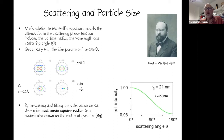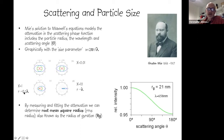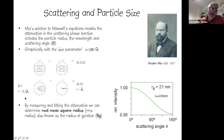It is common in the field to characterize particles with a size parameter X, which is essentially the circumference of the particle divided by the wavelength. When X equals one, the radius is about one-fifth of the wavelength. As the particle size increases, we get a predominantly unequal distribution of scattered intensity away from zero angle. By measuring and fitting this attenuation, we can determine a parameter known as the root mean square radius, also known as the radius of gyration.